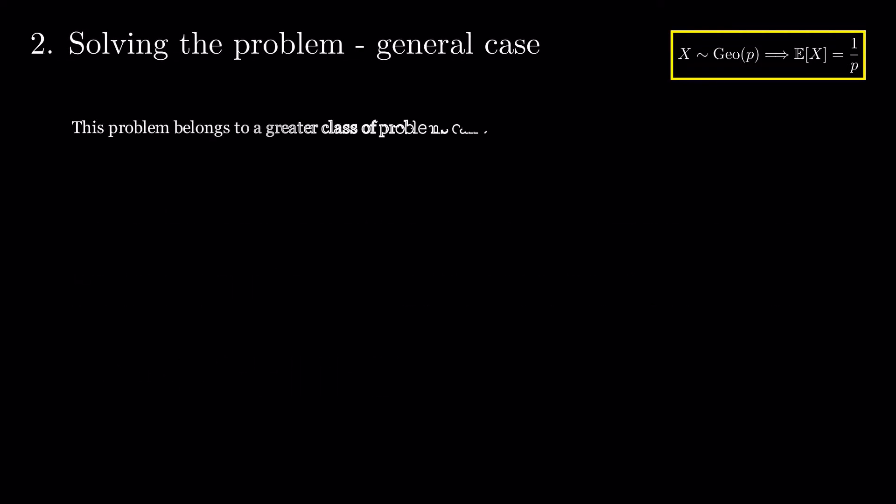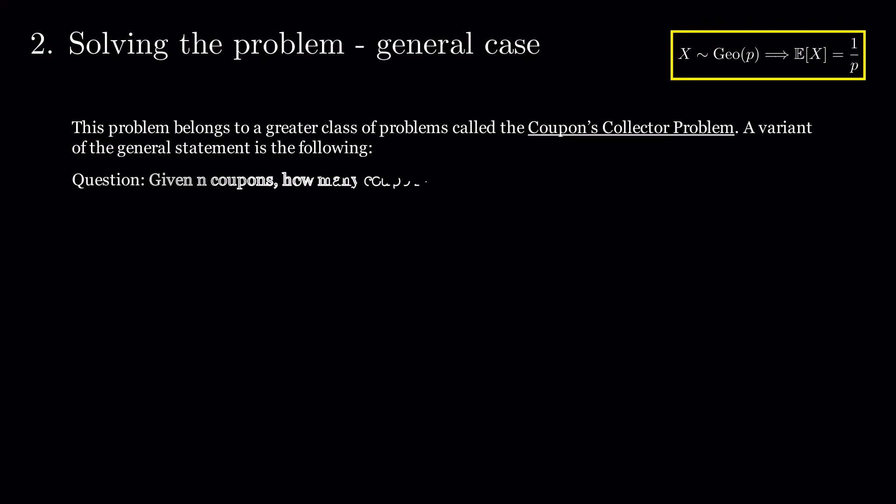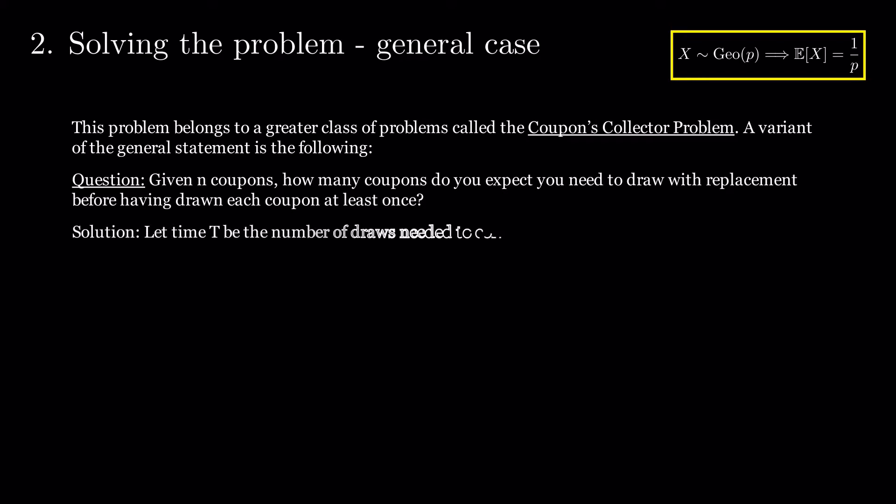This type of problem belongs to a greater class of problems called the coupon collector problem. A variant of the general statement is the following. Given n coupons, how many do you expect you need to draw with replacement before having drawn each coupon at least once? Let t be the number of draws needed to collect all n coupons. Using the same logic as before, expectation of t equals n times 1 over n plus 1 over n minus 1 and so on plus 1 over 2 plus 1.